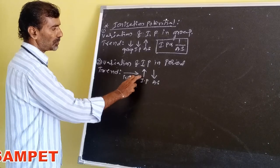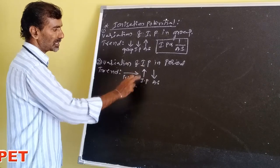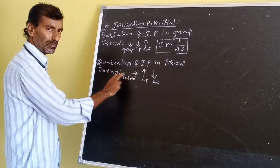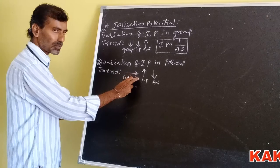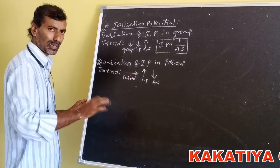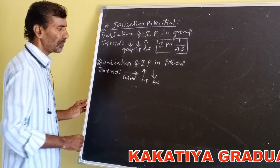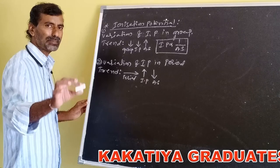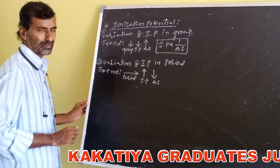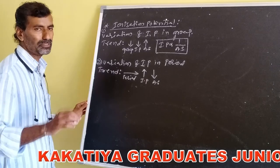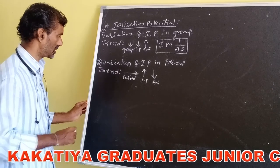Ionization potential values increase from left to right in the period, or across the period. But there are a few exceptions.